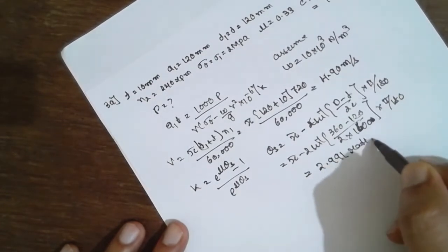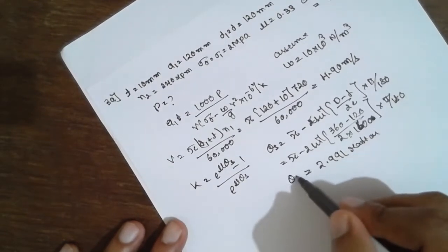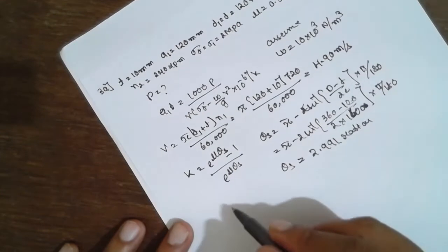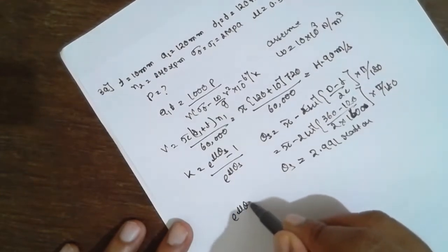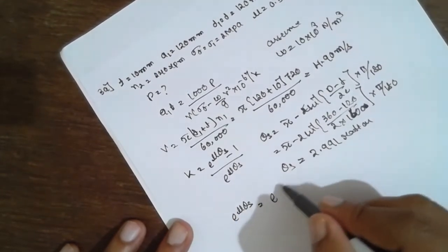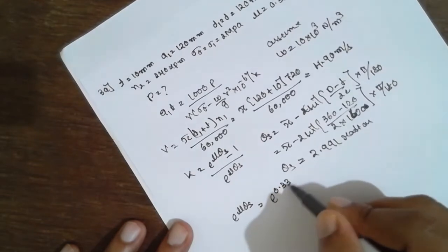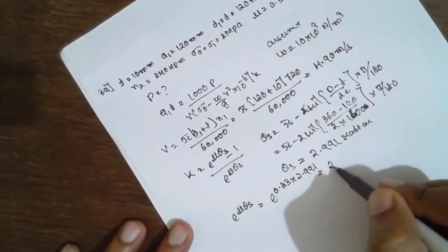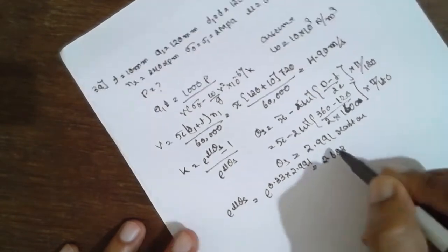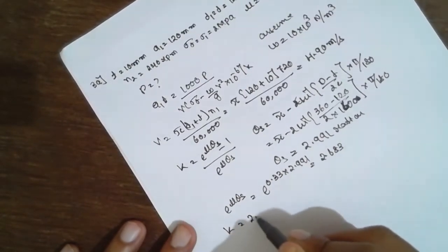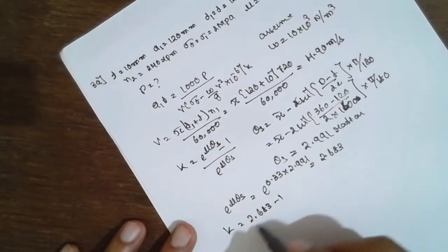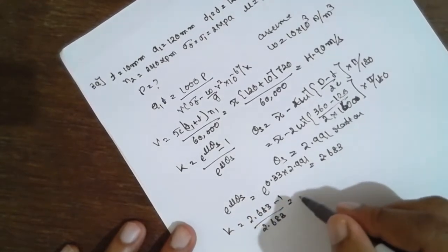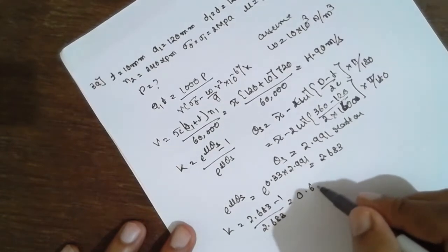Not per second, just radians. Theta_s. Once you get theta_s, substitute here. e^(μθ_s), mu is 0.33, theta is 2.991. Answer will be 2.683. So k = (2.683 - 1)/2.683, which equals 0.6272. The k value is recorded.